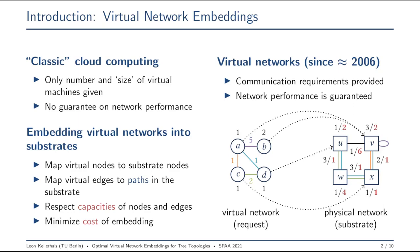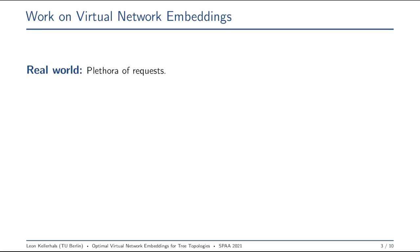This talk deals with how to find such a virtual network embedding in an algorithmic manner. Of course, this has been done plenty already in other research areas. The truth is, usually if you have such a substrate, you won't have a single request but you'll have to handle a plethora of requests. So how do we usually deal with this?